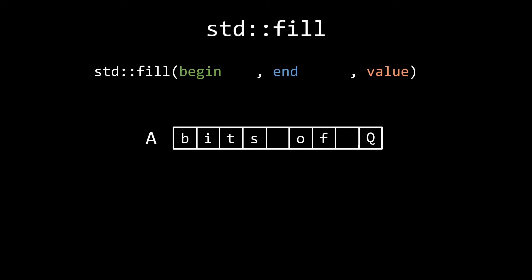Fill does exactly what it says on the box. It fills a range with the value passed to it. For example, if we pass it a.begin and a.end-2 as the range to operate on, we can overwrite the words bits and off with the values supplied as the third argument.